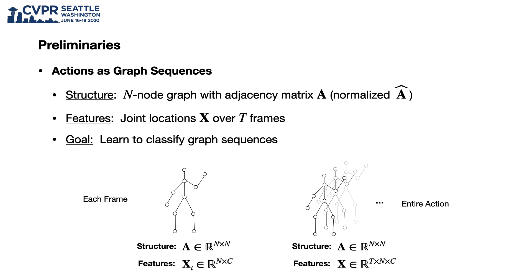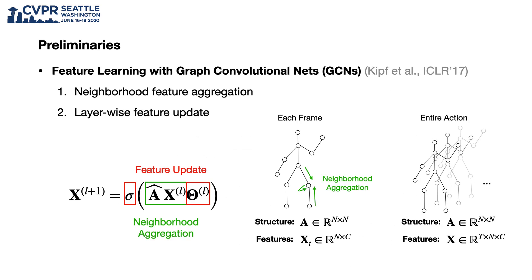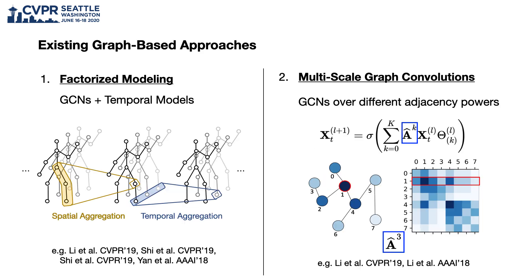With this formulation, a human action is then a sequence of graphs defined by the same adjacency matrix with changing node features over time. Most recent methods rely on graph convolutional networks to learn features from these graphs, where each layer involves two steps: first, neighborhood feature aggregation, and second, node feature update. On this basis, we focus on improving two aspects of existing approaches.